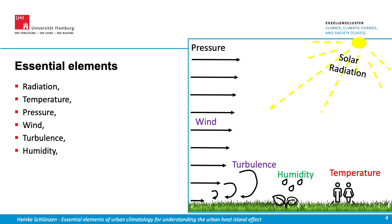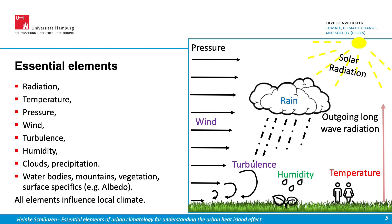Plants are an important influence parameter for forming the local climate. Evapotranspiration increases the humidity of the atmosphere, but for evapotranspiration heat is needed, so that temperature is reduced. Once humidity reaches saturation, clouds are formed and rain and other types of precipitation occur.